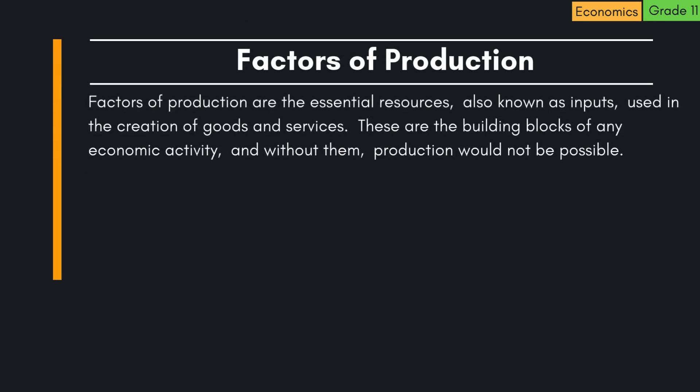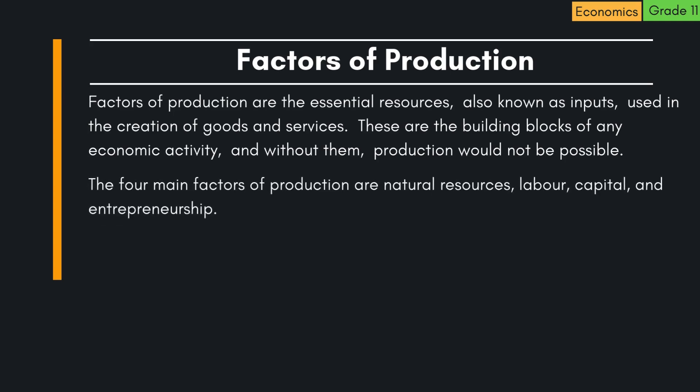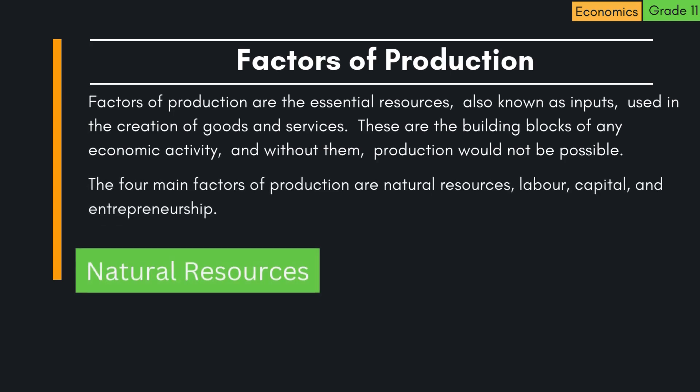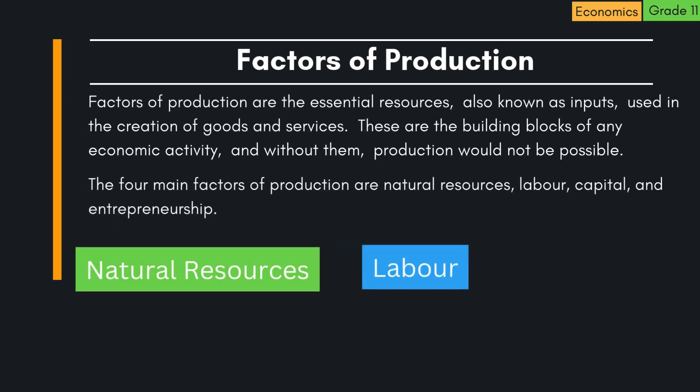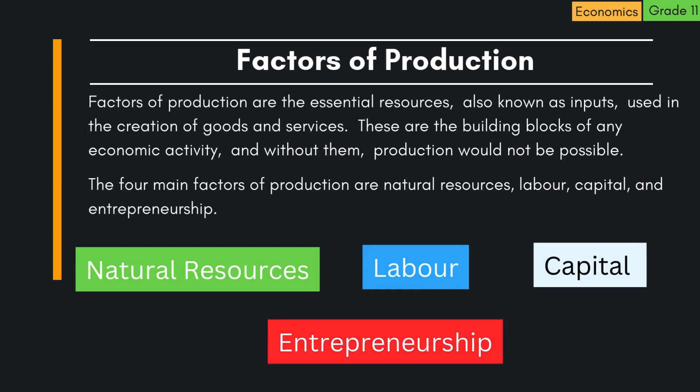Factors of production are the essential resources, also known as inputs, used in the creation of goods and services. These are the building blocks of any economic activity, and without them, production would not be possible. The four main factors of production are natural resources, labor, capital, and entrepreneurship.